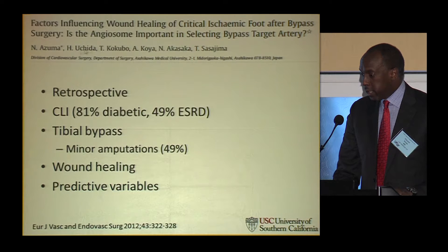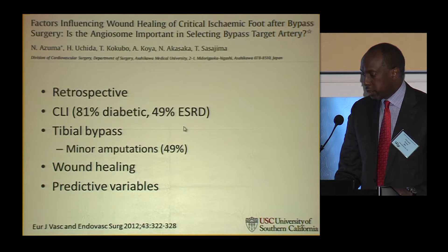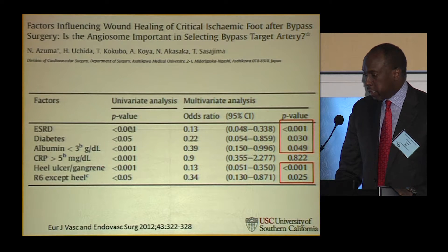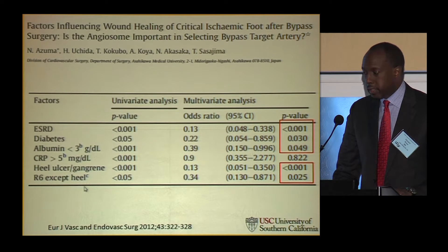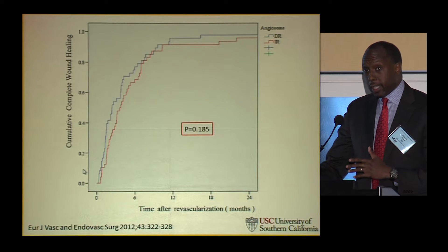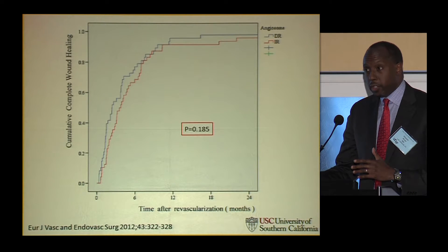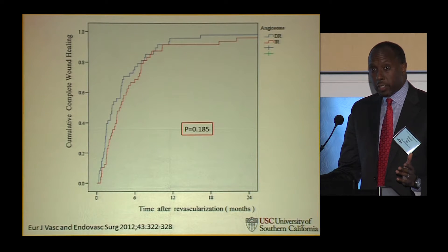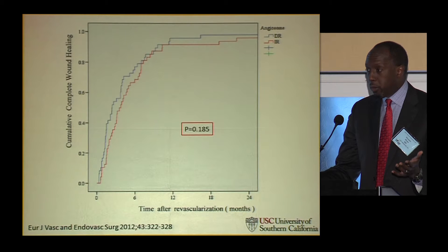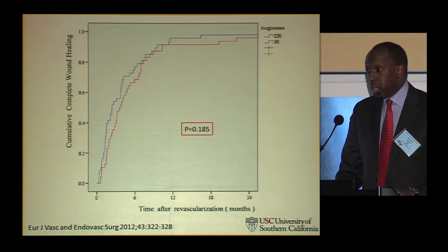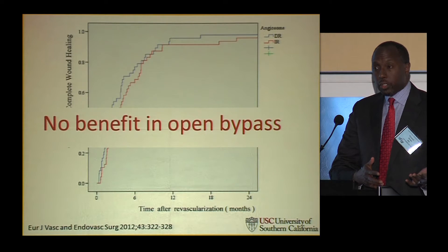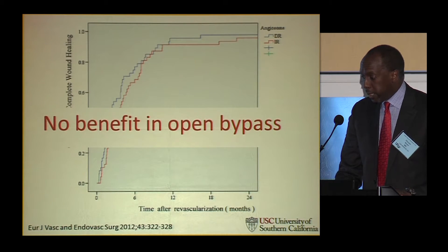Dr. Azuma's study out of Japan was another retrospective study, about 50% end-stage renal disease, looking at wound healing and predictive variables. They found patients with end-stage renal disease, diabetes, nutritional compromise, and heel ulcers don't do as well. Initially they said direct revascularization is better, but then they did propensity matching because the two groups weren't equal in comorbidities — and they found no difference whether you went directly to the angiosome or not. Now you had conflicting papers.